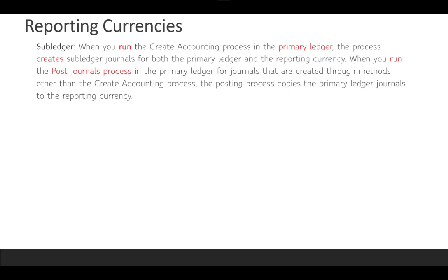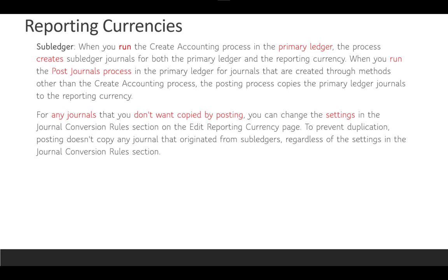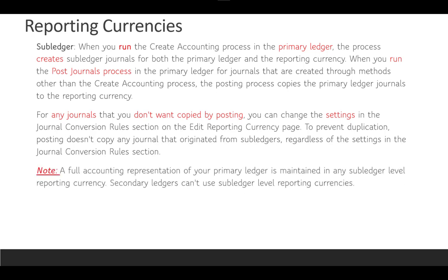For Sub Ledger level reporting currency, when you run Create Accounting in the primary ledger, the process creates the same accounting for both primary and reporting currency. When you run the post general process in the primary ledger for journals created through methods other than Create Accounting, the posting process also copies primary ledger journals to reporting currency. A full accounting representation of your primary ledger is maintained in any subledger level reporting currency. Note that secondary ledgers cannot use subledger level reporting currencies.